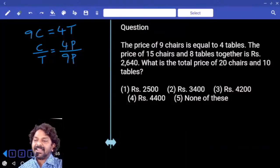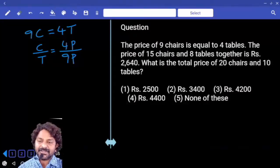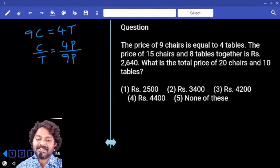The price of 15 chairs and 8 tables together is 2,640. What is the total price of 20 chairs and 10 tables?